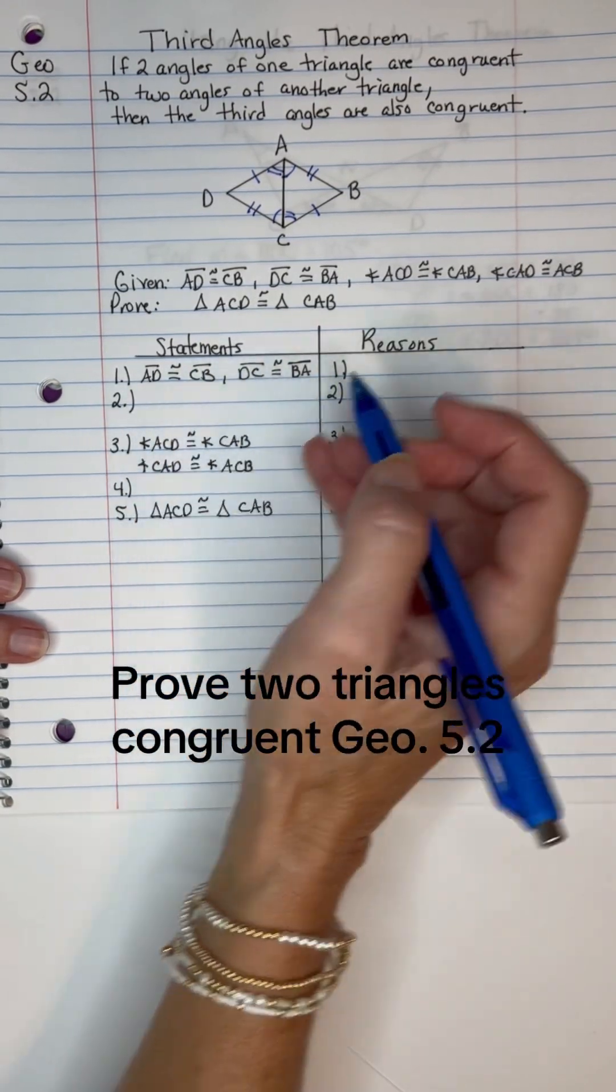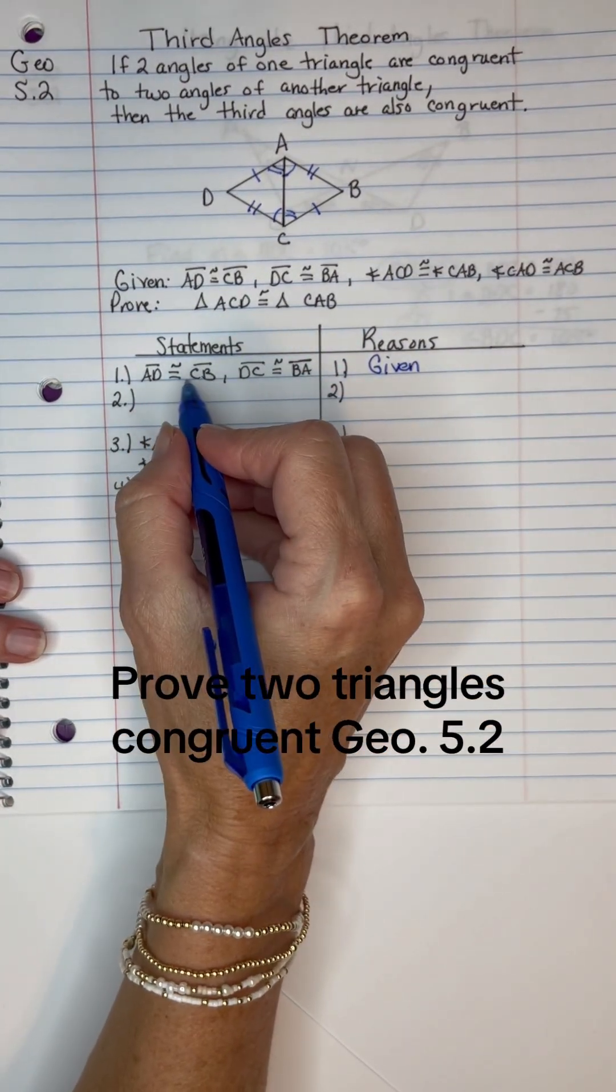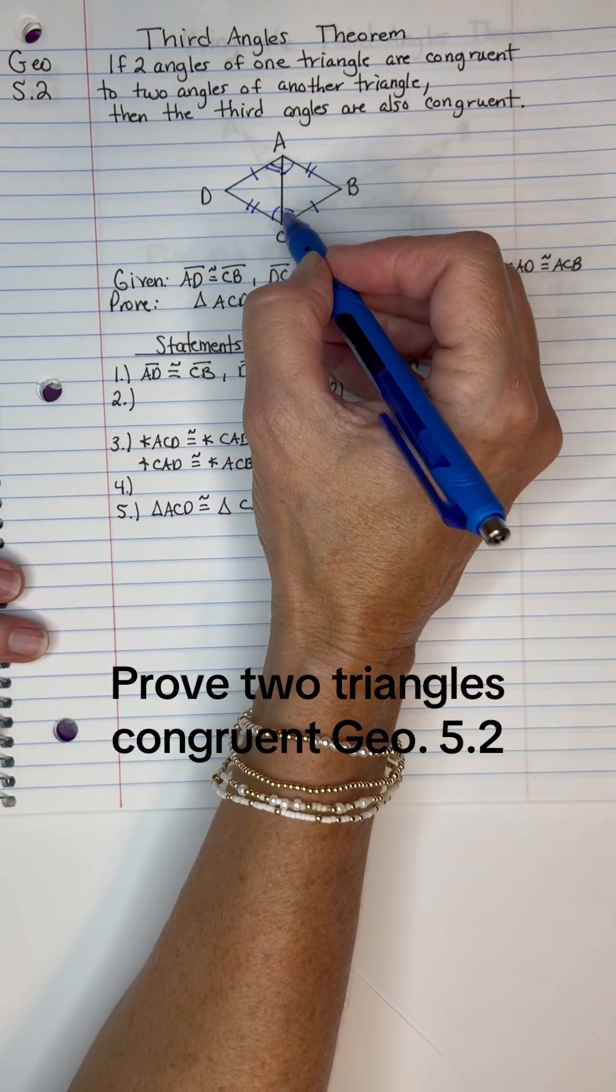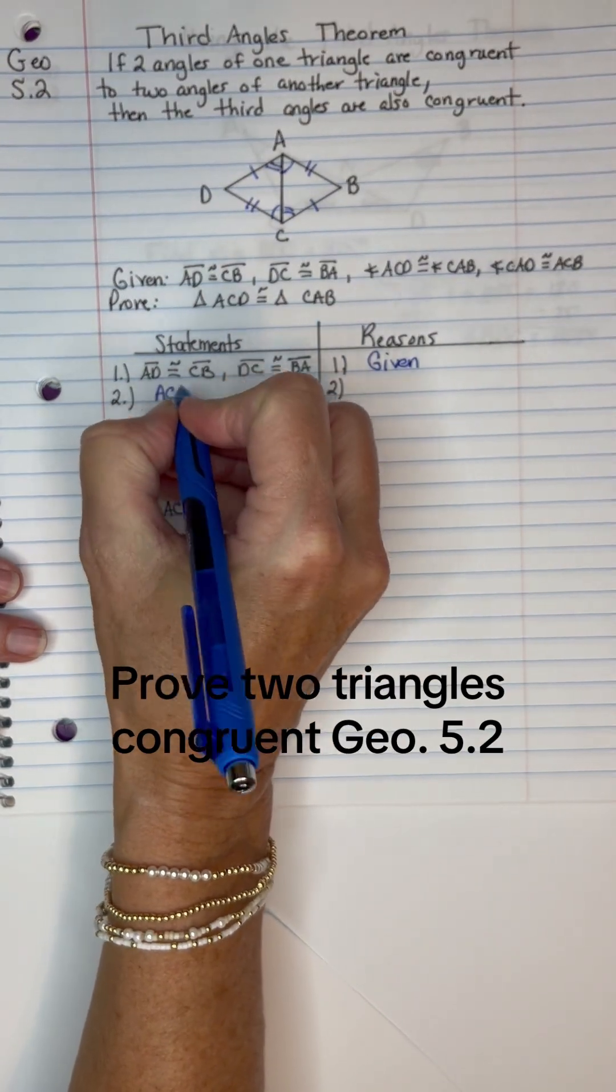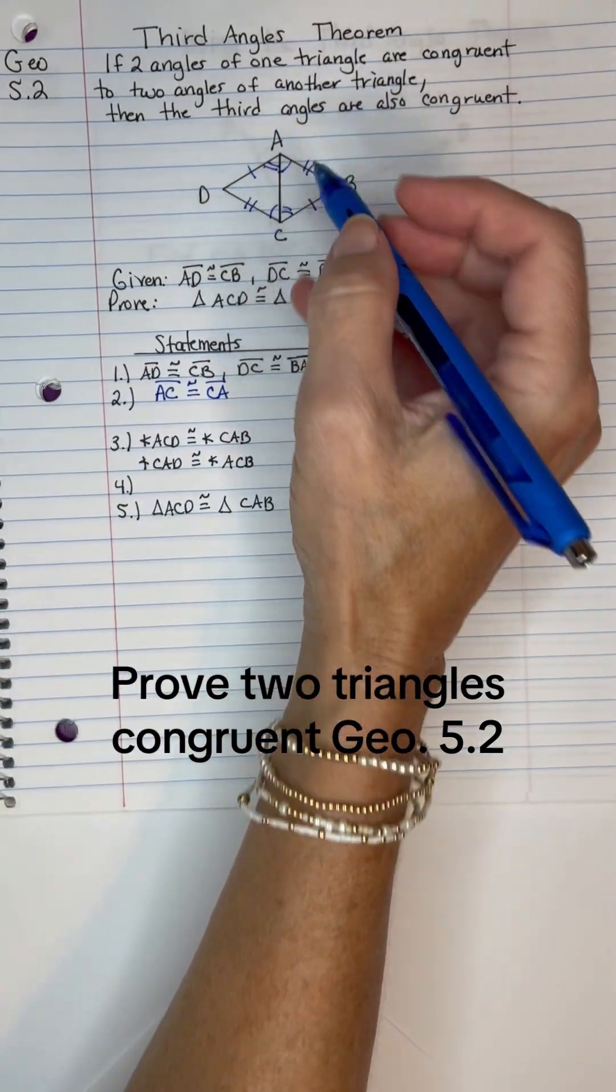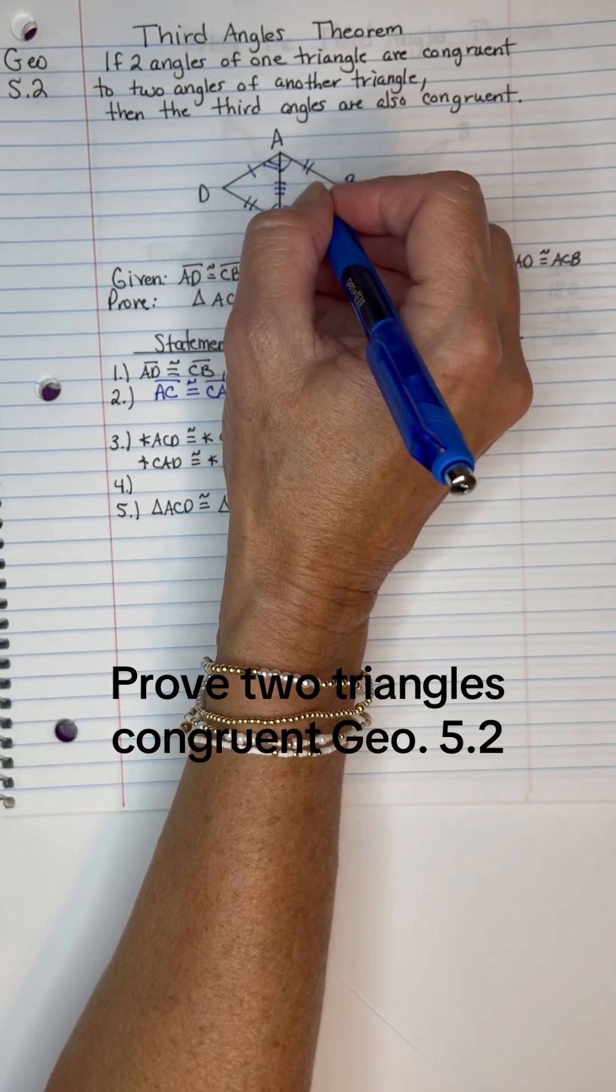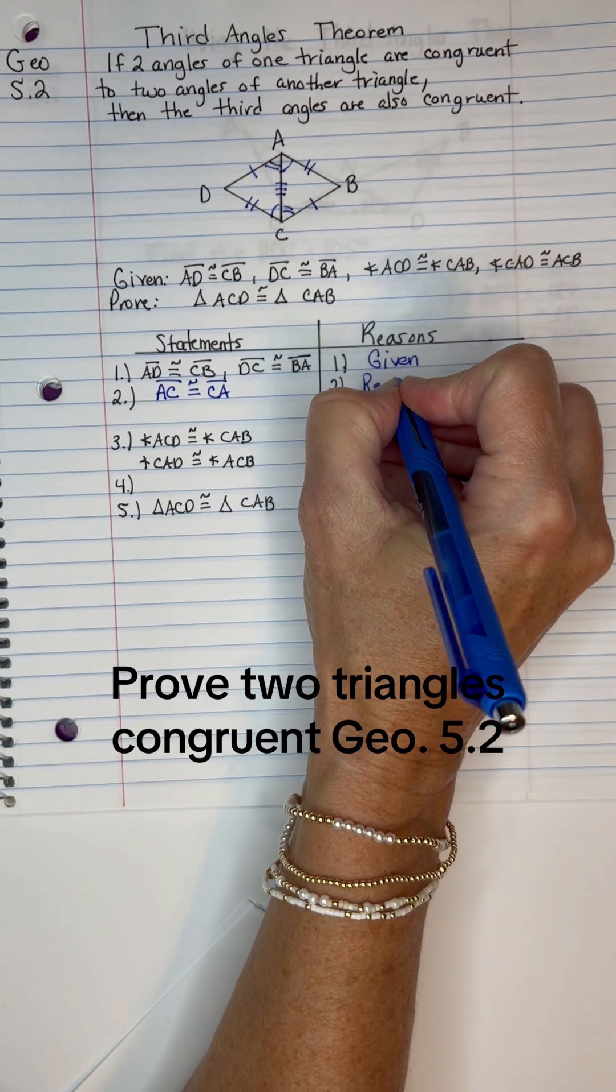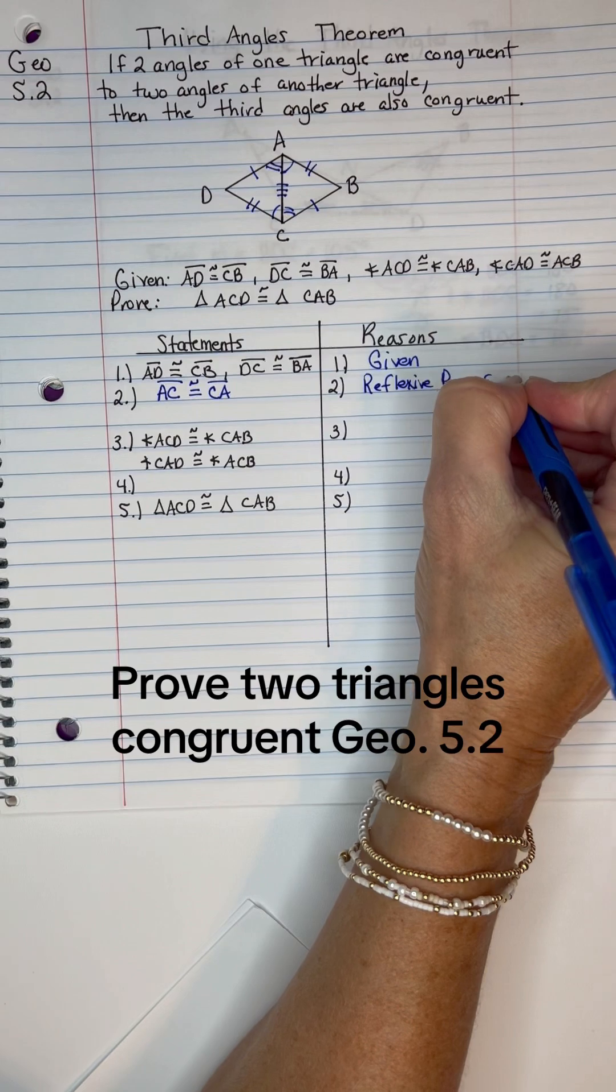Now first of all, right here, we're going to say the reason I can state those congruent segments is because of the given. Now I need to state that AC, which is the only segment left, is congruent to itself. So segment AC is congruent to segment CA. That segment is in both the left and the right triangle, so of course it's congruent to itself. And the reason I can say that, we studied a while back, was the reflexive property of congruence.